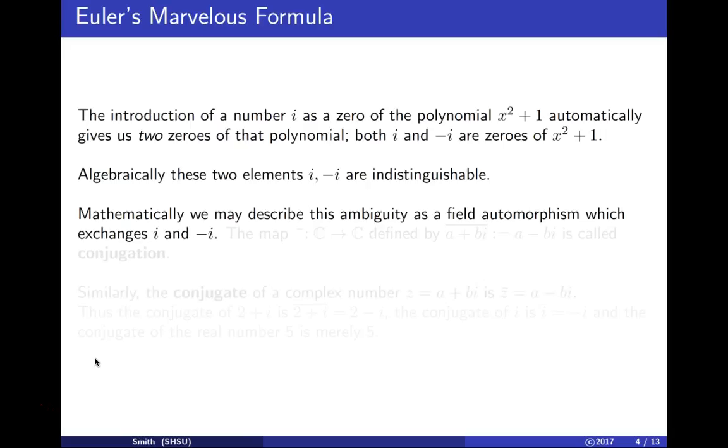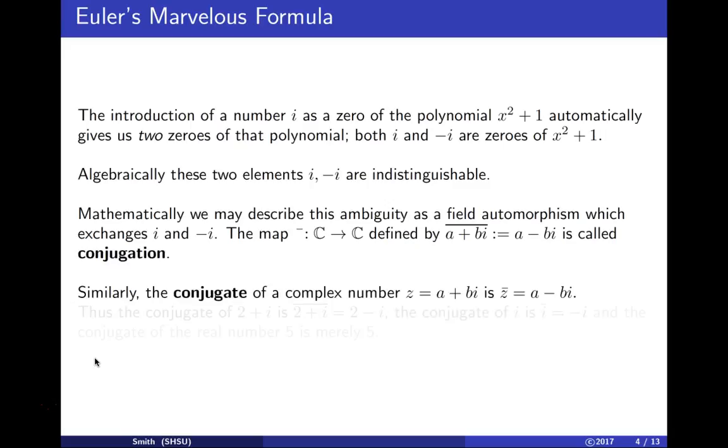We may describe this ambiguity between i and -i as a field automorphism. The map that replaces a + bi by a - bi is called conjugation. The conjugate of z = a + bi is z̄ = a - bi.